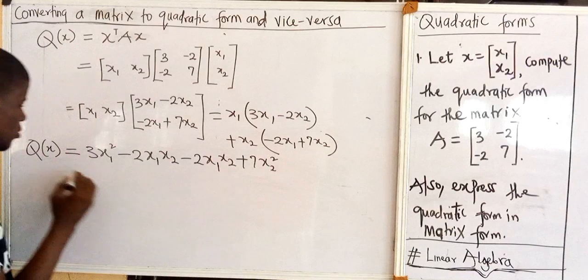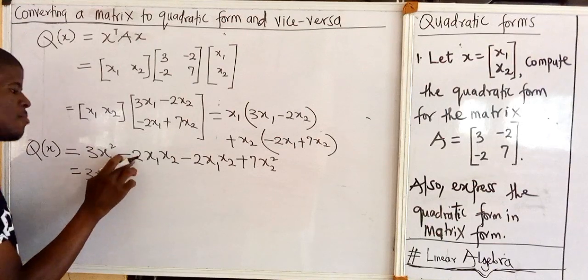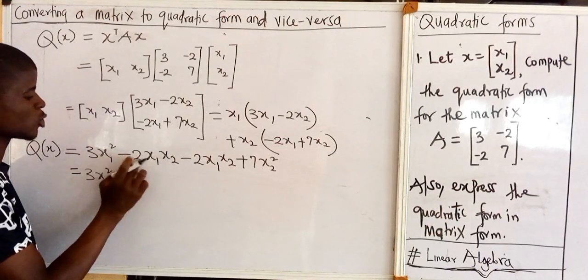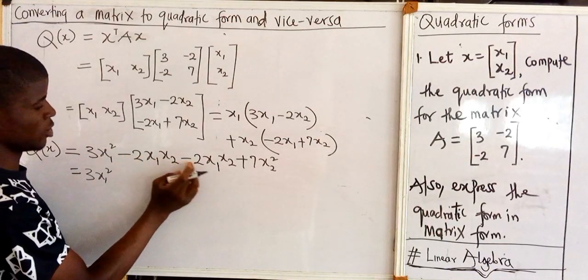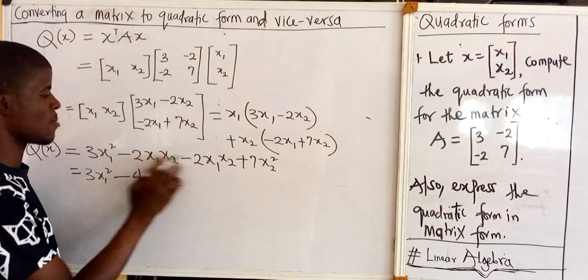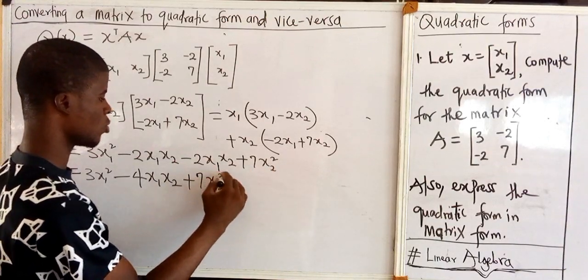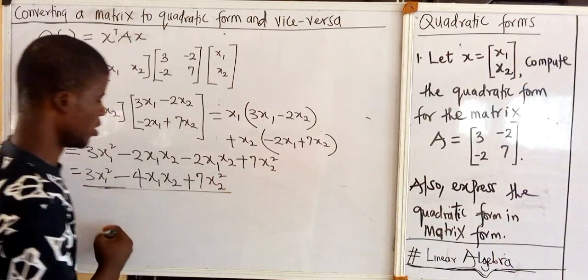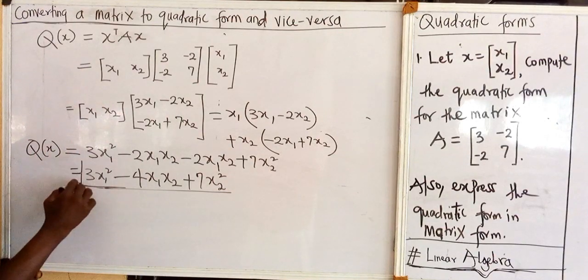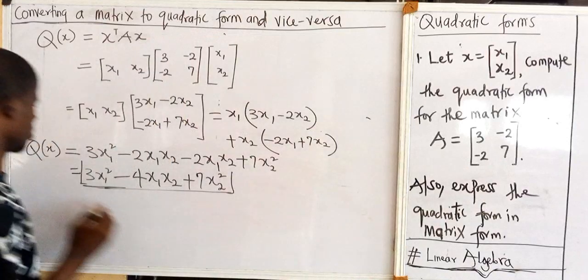So let's simplify: 3x1 squared, minus 2x1x2 minus 2x1x2 is minus 4x1x2, they are both like terms, then plus 7x2 squared. So this is the quadratic form of this matrix.